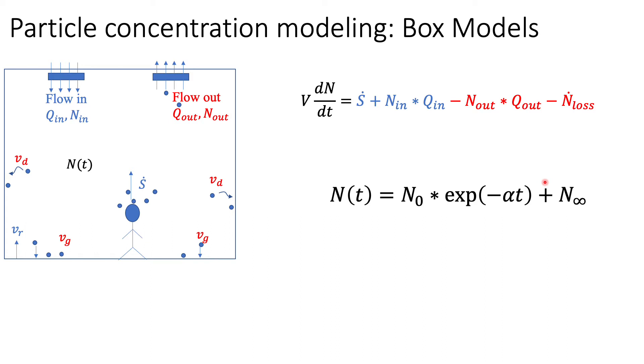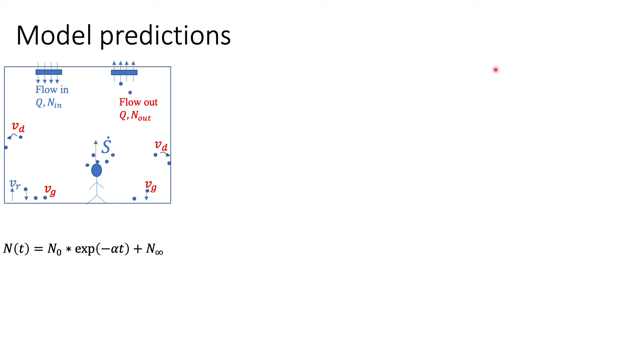To understand the physical meaning of these constants alpha and N infinity, let's look at a simpler case. Consider a person who's talking and breathing, putting out particles in the size range of 500 nanometers to about 5 micron. These particles are not small enough to deposit due to diffusion or big enough to settle down due to gravity. If you are coughing and sneezing, some of these effects become important. In the simple scenario, the important things to consider would be the source rate, the rate at which particles are emitted by this person, and the flow and particles coming in and out with the ventilation system.